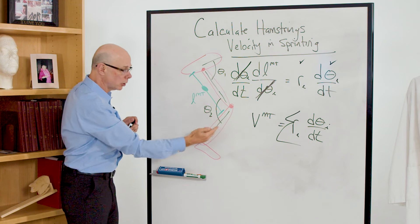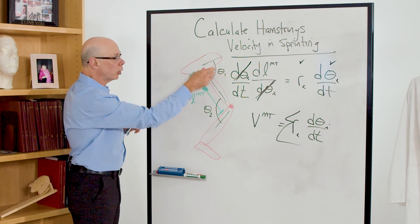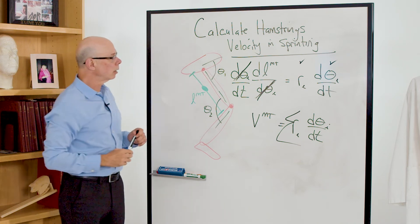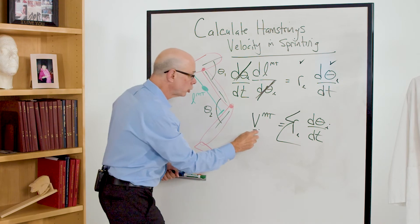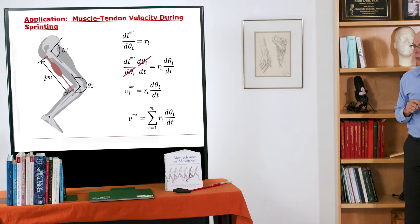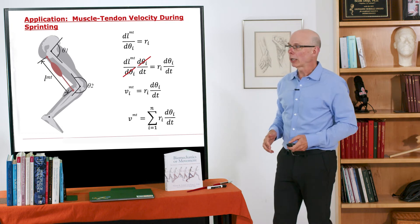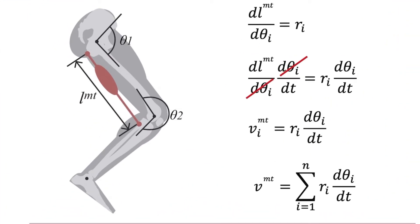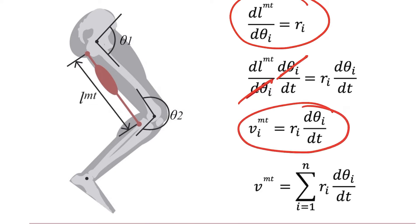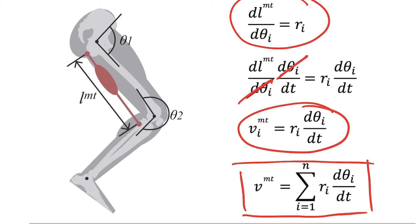The total muscle-tendon velocity is the sum of the moment arms times the joint angular velocities. It will be the sum of the moment arm times the joint angular velocity at the knee, plus the moment arm times the joint angular velocity at the hip. We use the subscript i and sum over each joint the muscle crosses. So we can use musculoskeletal geometry to find the hamstring velocity — the total muscle-tendon velocity is the sum of these products of moment arms times joint angular velocities.